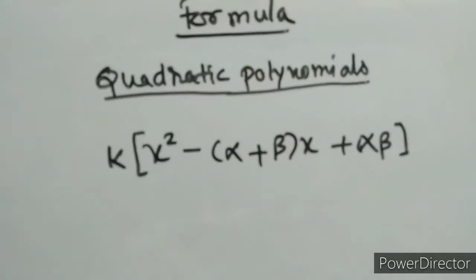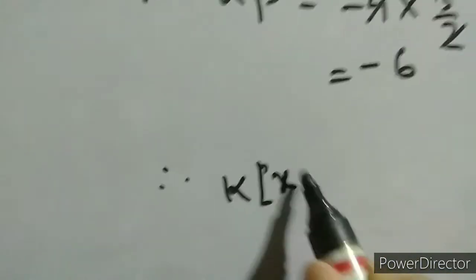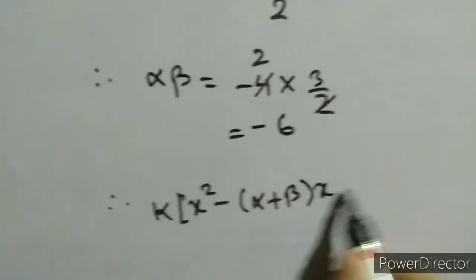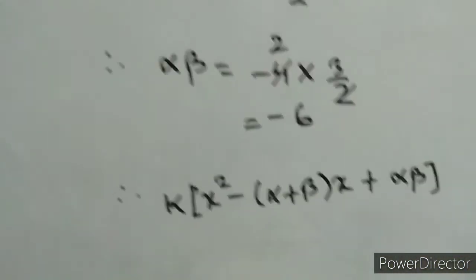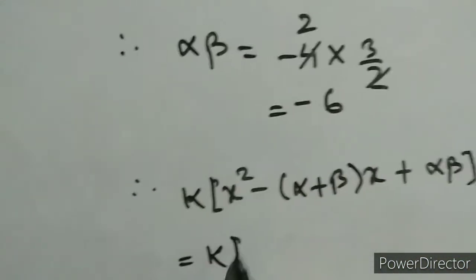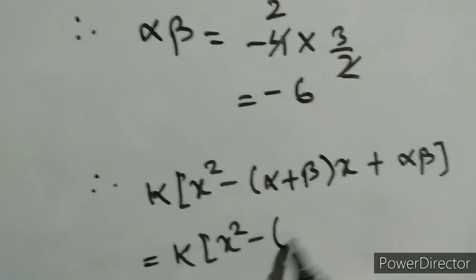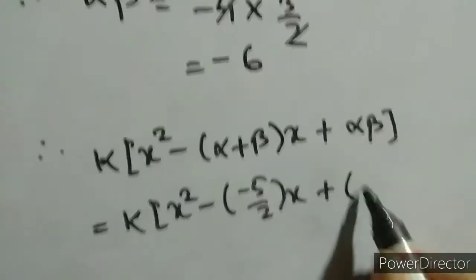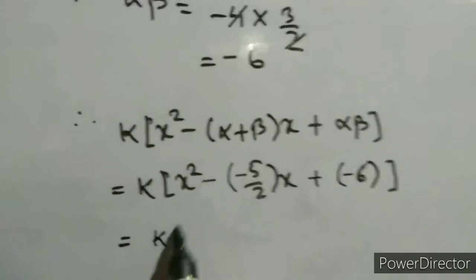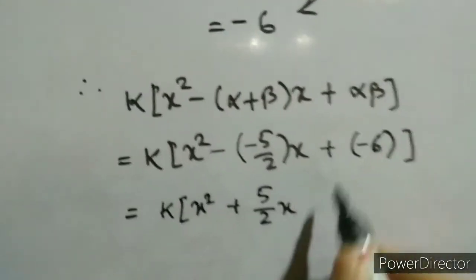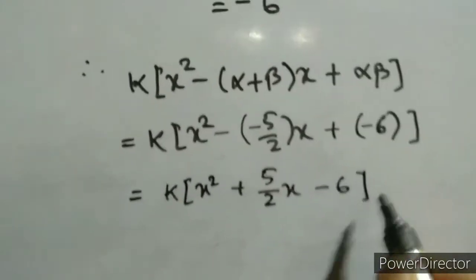Now we put these values into the quadratic formula: k times (x squared minus (alpha plus beta) times x plus alpha times beta). Our alpha plus beta is minus 5 by 2, and alpha times beta is minus 6. So we get k times (x squared minus (minus 5 by 2) x plus (minus 6)), which gives k times (x squared minus 5 by 2 x minus 6).